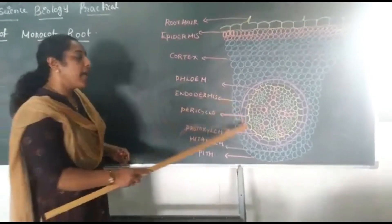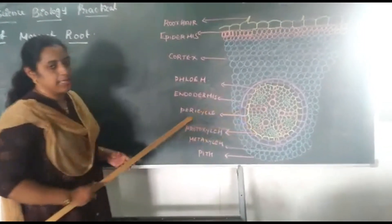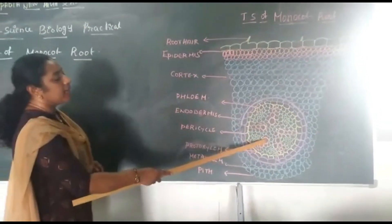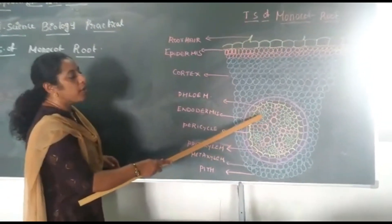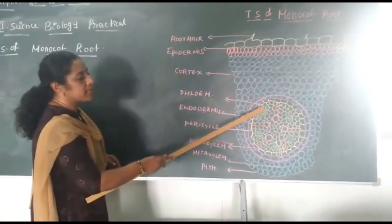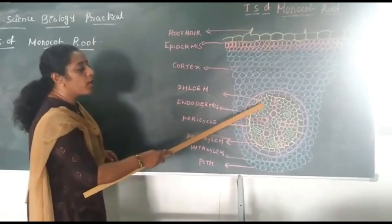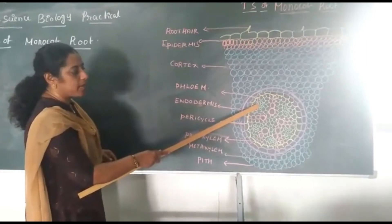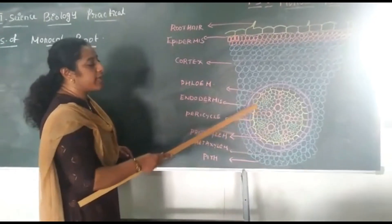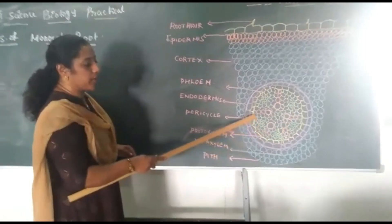Exarch arrangement means the Protoxylem is arranged towards the periphery. Protoxylem is small in size and Metaxylem is bigger. Then you can find Phloem, located in between the Xylem vascular bundles. The green color portion is the Phloem. The vascular bundle consists of alternate Xylem and Phloem, and such an arrangement is called radial vascular bundle.